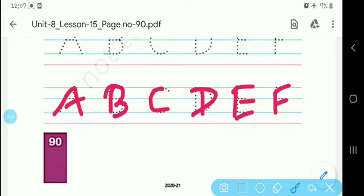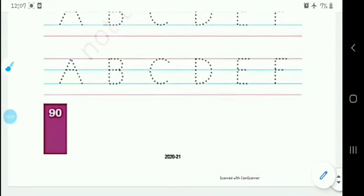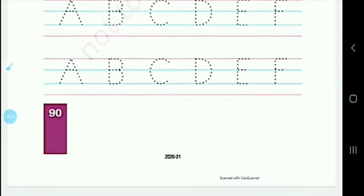A, B, C, D, E, F. So you have to write it in your copy and trace it in your book. Okay?